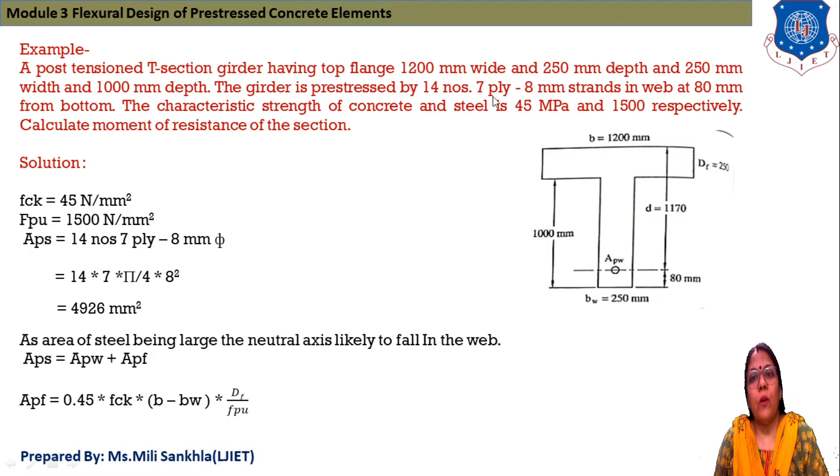The girder is pre-stressed by 14 number of 7 φ 8 mm strands in web at 80 mm from bottom. The characteristic strength of concrete is 45 MPa and strength of steel is 1500 MPa respectively. Calculate the moment of resistance for the section according to strain compatibility method.